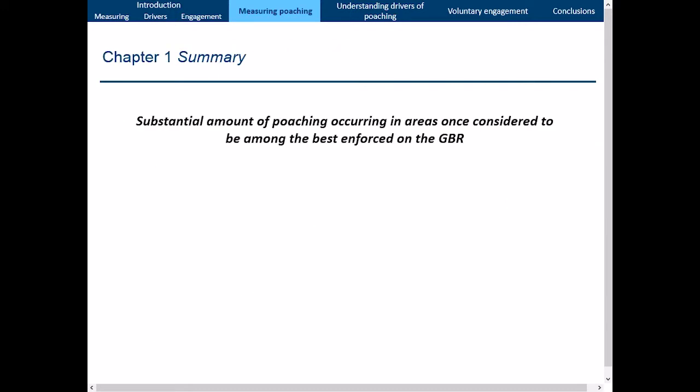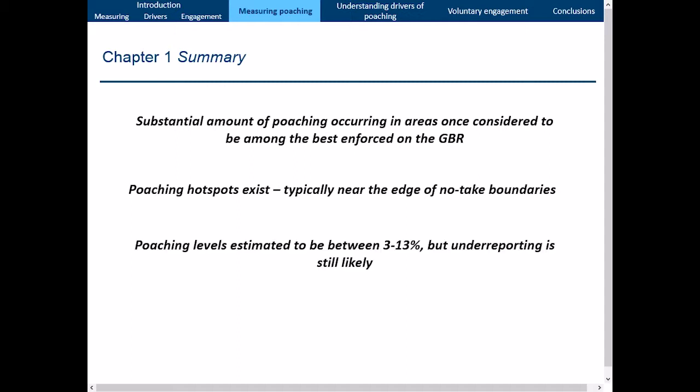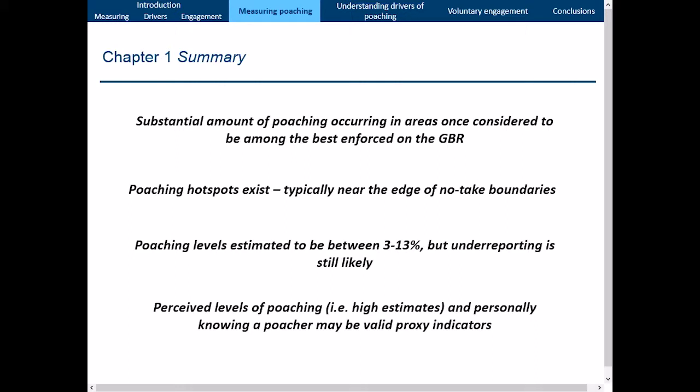In summary: substantial amounts of poaching are occurring in areas once considered among the best enforced on the Great Barrier Reef. Poaching hotspots exist, typically near the edges of no-take boundaries. Poaching levels may be between 3 and 13%, but there's probably some underreporting happening. Personally knowing a poacher and perceived levels of poaching may be valid proxy indicators.